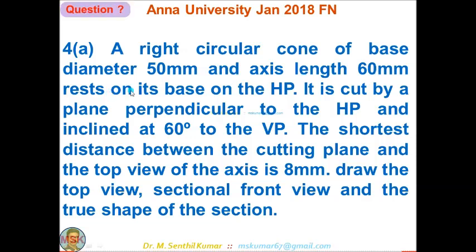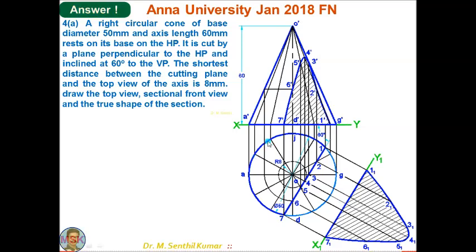Question 4A: a right circular cone of base diameter 50 mm and axis length 60 mm rests on its base on HP. It is cut by a plane perpendicular to HP and inclined at 60 degrees to VP. The shortest distance between the cutting plane and the top view of the axis is 8 mm. Draw the top view, sectional front view, and true shape of the section. Draw the projection of the solid, divide the circle into 12 parts, show all 12 generators, and draw the corresponding front view.